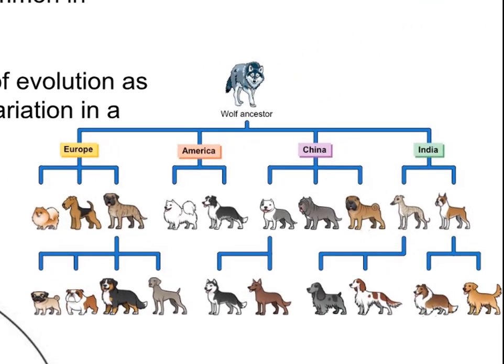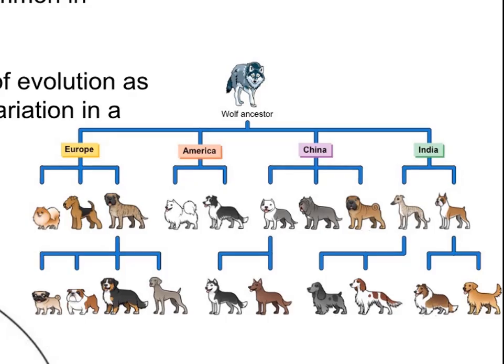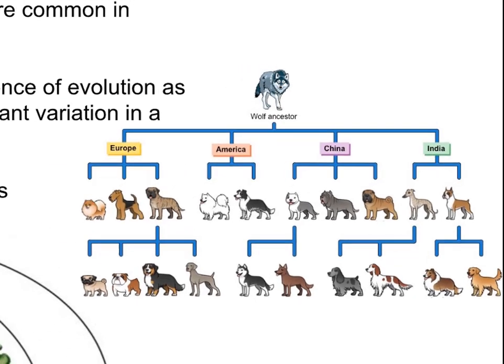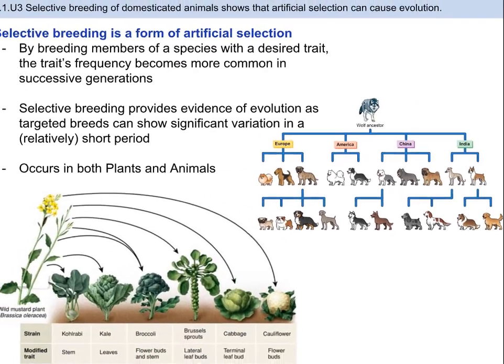The same thing goes for domesticated animals. Wolves with specific traits were chosen and bred with each other, and then those desired traits were bred, and so on. Over a very long period of time, the dog no longer looked anything like the wolf. Today, we have 340 dog breeds that are recognized, all very different from the wolf they were originally chosen from. However, I must point out that they are still technically the same species.